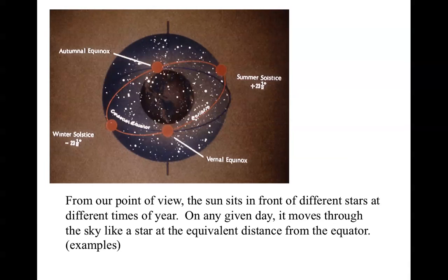From our point of view, the sun sits in front of different stars at different times of year, but on any given day it moves through the sky like a star at the equivalent distance from the equator. For example, at the vernal equinox and the autumnal equinox, when the sun is on the celestial equator, it follows exactly the path that a star would follow, rising due east and setting due west. At the summer solstice, when the sun is 23.5 degrees north of the equator, it rises in the northeast and sets in the northwest and spends more than 12 hours up in the sky.